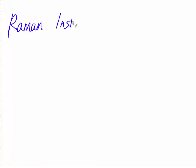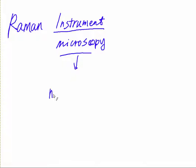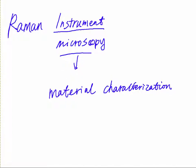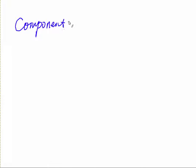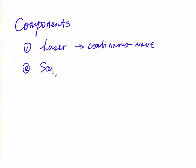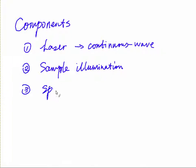Now we introduce some things about the Raman instrument. We mostly talk about Raman spectroscopy, which is usually used for materials characterization. In a Raman microscope, the components typically include a laser source — a continuous wave laser — as well as a sample illumination system and collection system. The third component is a spectral analyzer, and the fourth is a detector to detect the Raman signal.